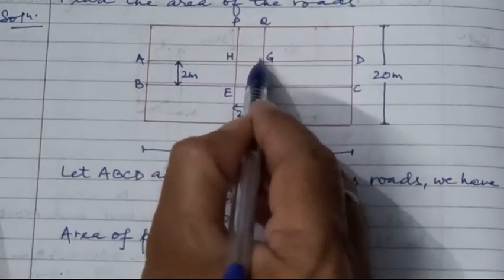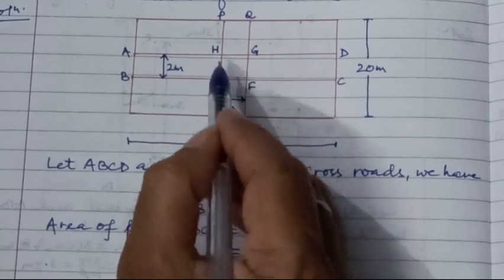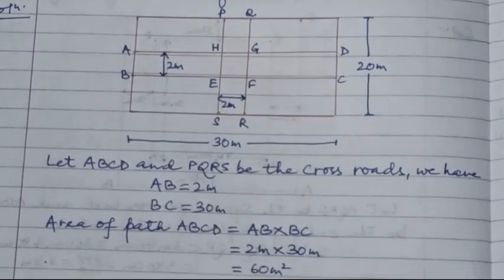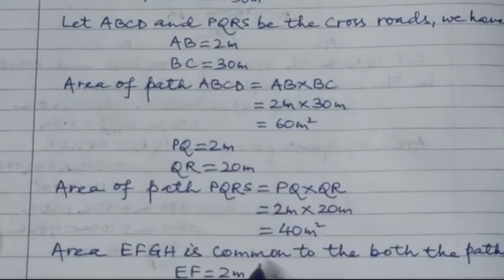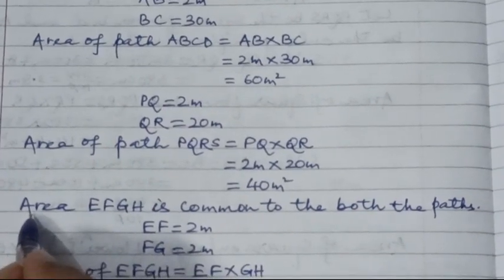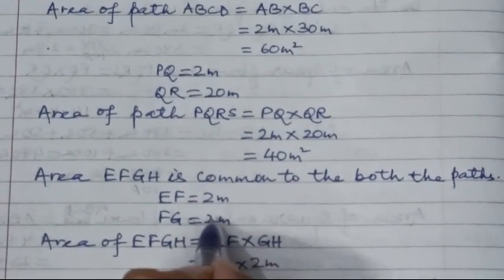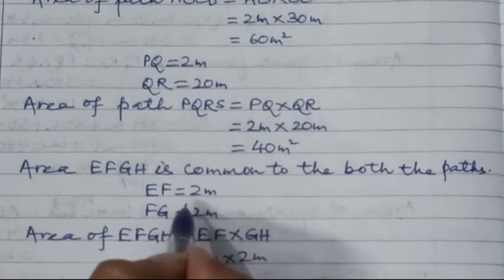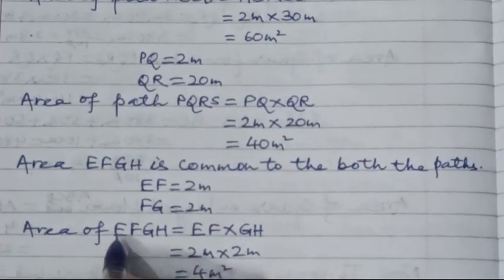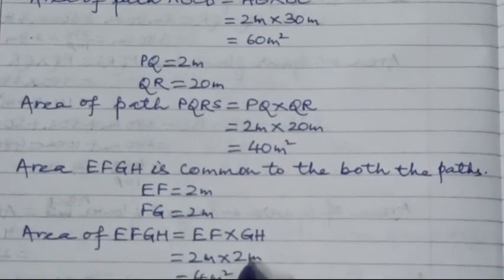But this portion EFGH is common to both roads, so we need to find its area separately. EFGH is common to both roads. EF is 2 meters and FG is 2 meters, because this common portion looks like a square. Therefore EF equals 2 meters and FG equals 2 meters. The area of EFGH equals EF into FG, which is 2 meters into 2 meters, giving us 4 meter square.